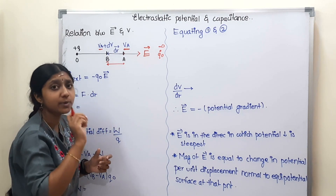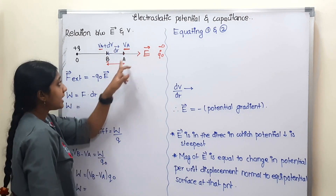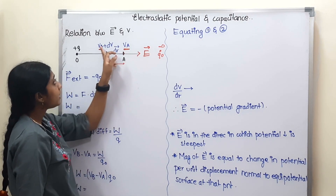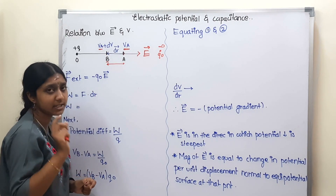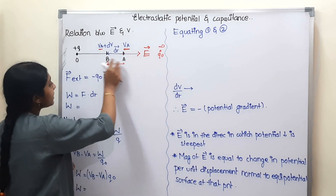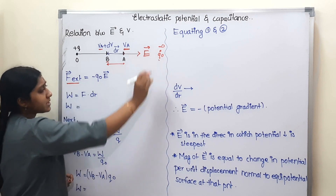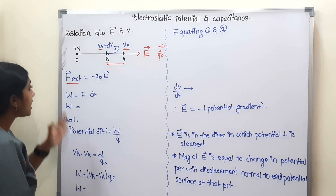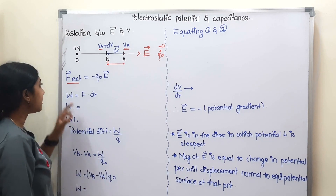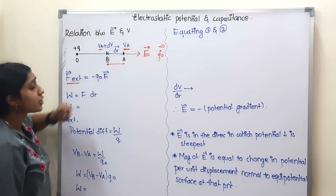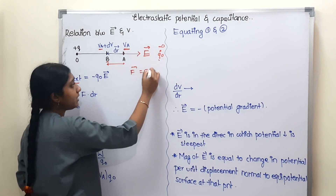If we change the distance by dr, the potential changes to Va plus dV. Now, according to the electric field, we have the formula: F is equal to qE. We already have this formula from the first chapter.